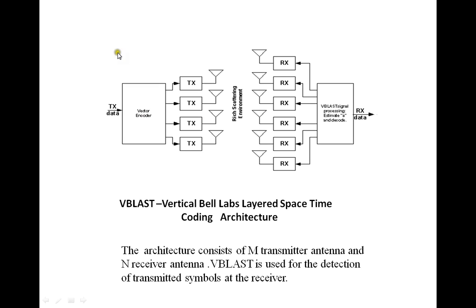This is the transceiver architecture of a MIMO system with a VBLAST detection system. The transmitter data passes through the encoder and is divided into several layers, passed on to the transmitter antennae. Thereafter, the receiver antennae pass the signal into the VBLAST detection system. The architecture consists of M transmitters and N receiver antennae, and VBLAST is used for detection of transmitted symbols at the receiver.